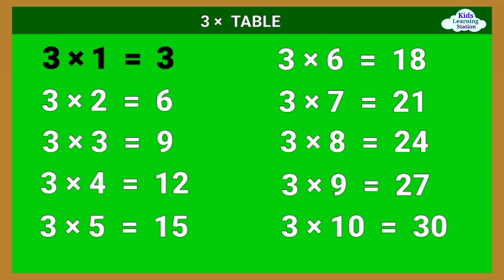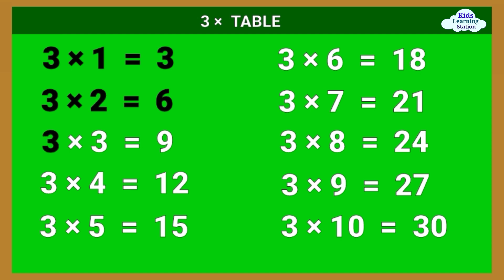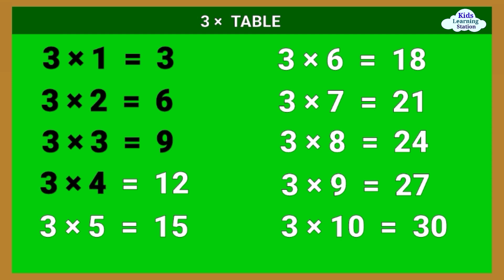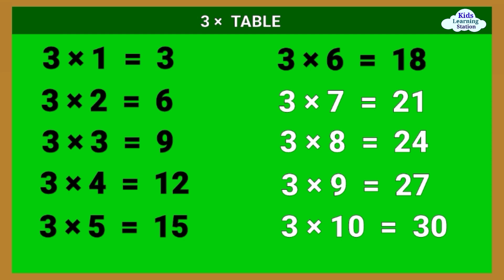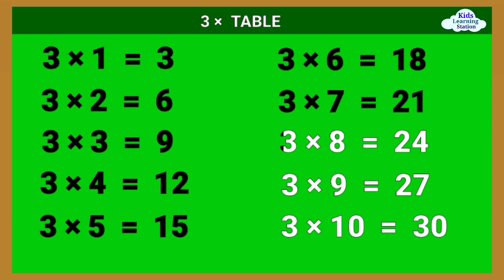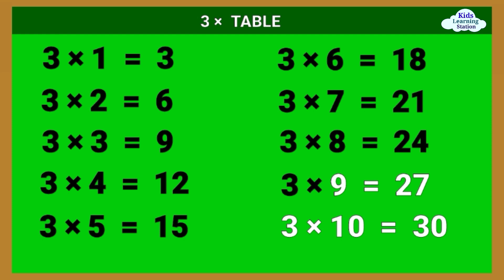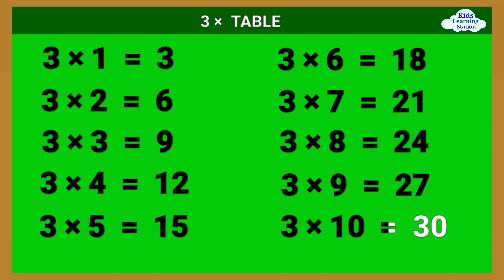3 times table: 3 times 1 equals 3, 3 times 2 equals 6, 3 times 3 equals 9, 3 times 4 equals 12, 3 times 5 equals 15, 3 times 6 equals 18, 3 times 7 equals 21, 3 times 8 equals 24, 3 times 9 equals 27, 3 times 10 equals 30.